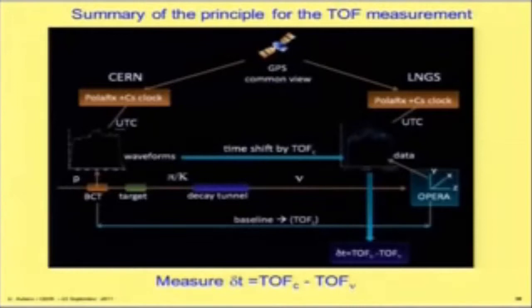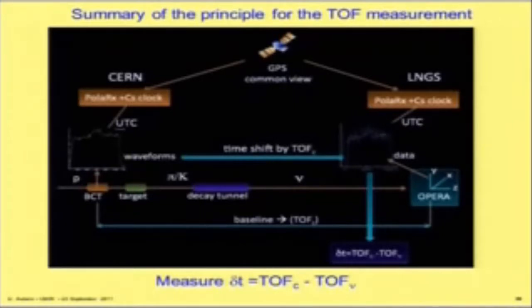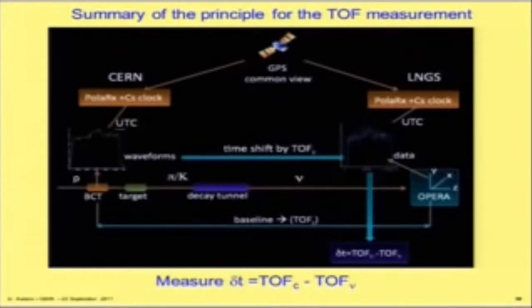In this slide there is a sketch of the principle of the measurement. We measure the proton waveforms with the BCT, then we know precisely the distance from the point where they are measured — the BCT and the OPERA reference frame — using geodesy and knowledge of the beam line at CERN. The waveforms measured at CERN are tagged with respect to UTC. We can shift them by taking into account the time of flight corresponding to this distance divided by c, and then compare this shifted waveform to the data recorded in Gran Sasso, which are also UTC time-tagged with a high-accuracy system synchronizing at the one-nanosecond level.